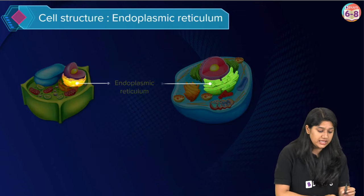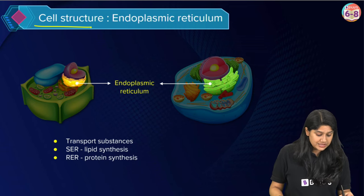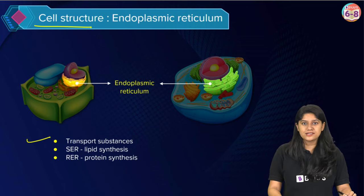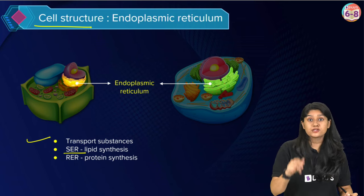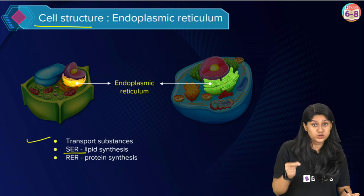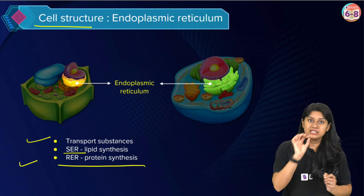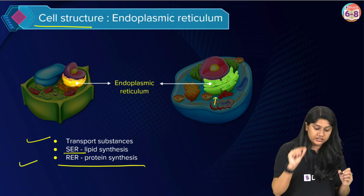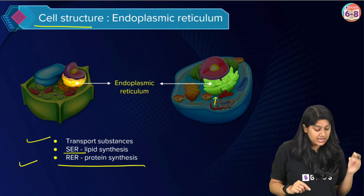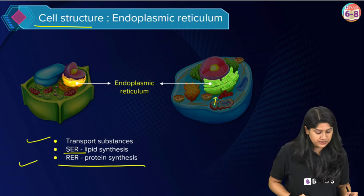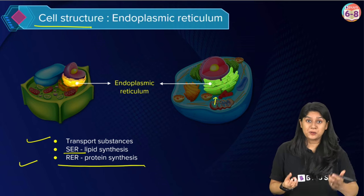Now let's move to the next organelle — the endoplasmic reticulum (ER). ER helps in the synthesis of proteins and lipids. Smooth endoplasmic reticulum (SER) helps in the synthesis of lipids and lacks ribosomes. Rough endoplasmic reticulum (RER) has ribosomes on it and helps in protein synthesis. The ER also helps in the transportation of substances.